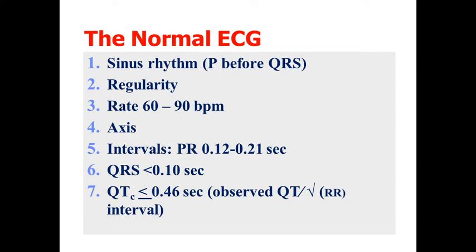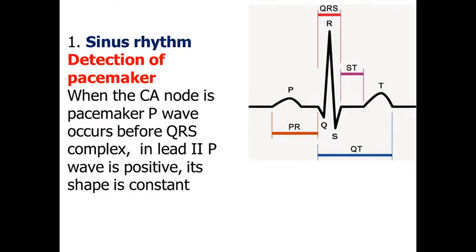Then we have to assess the axis of the heart, and then we should assess intervals, duration of complexes, and duration of segments and intervals like QT. First step is rhythm — we should assess whether it is sinus rhythm or non-sinus rhythm. If on your patient's ECG you see a P wave present before the QRS complex, it means that before depolarization of the ventricles you have depolarization of the atria — that means sinus rhythm.